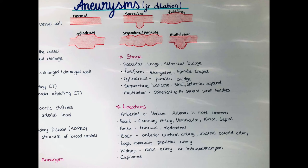Aneurysms can be found in different locations. First, the kind of blood vessel is distinguished — it can be arterial, venous, or in capillaries, with arterial aneurysms being the most common. They can also occur in the heart — in the coronary arteries, in the ventricles, the atrium, or the septa — and can be congenital, caused by punctures or interventions, or by different disorders.